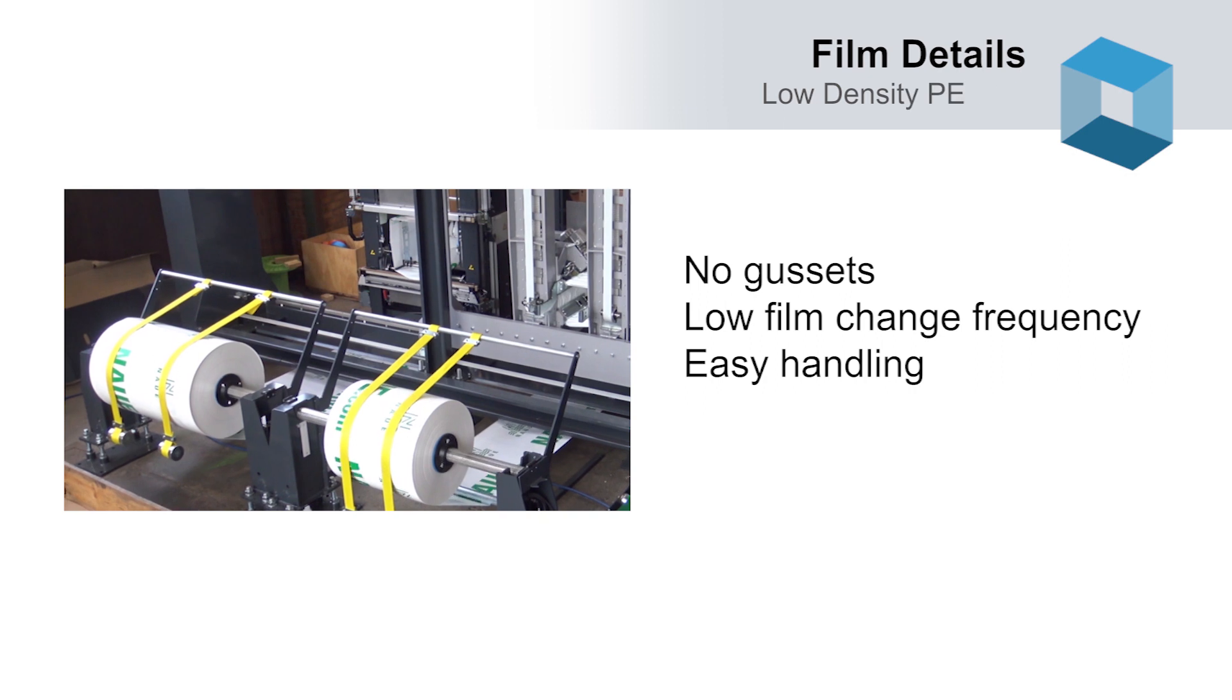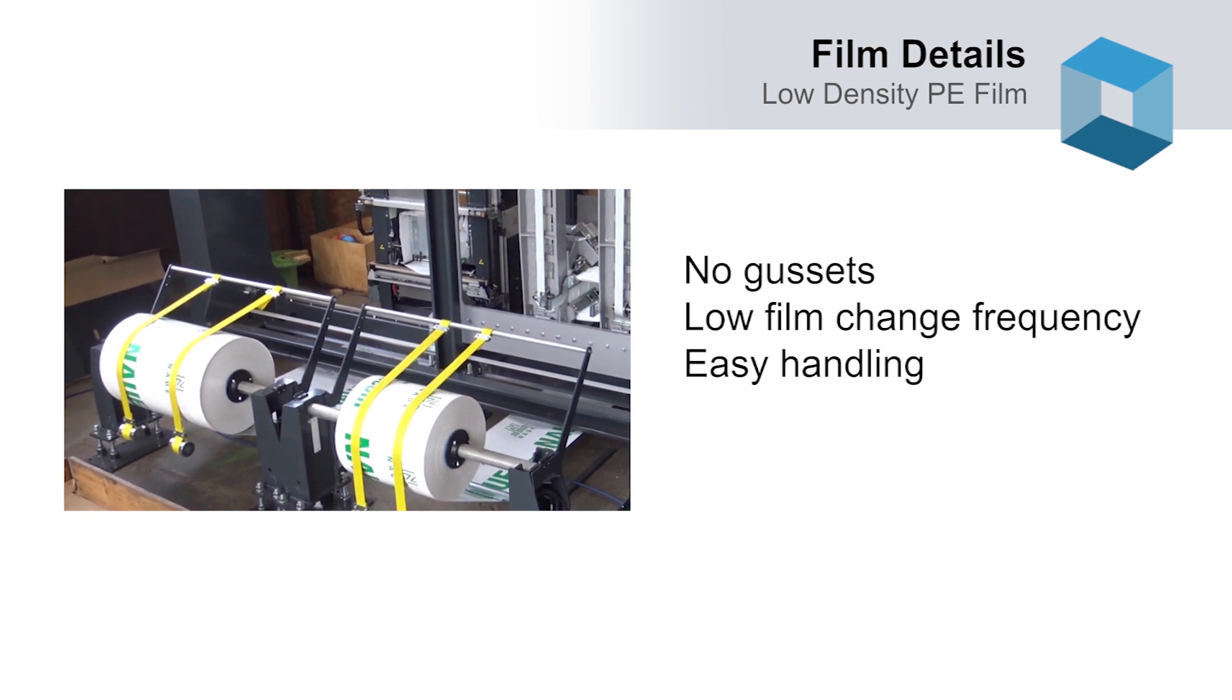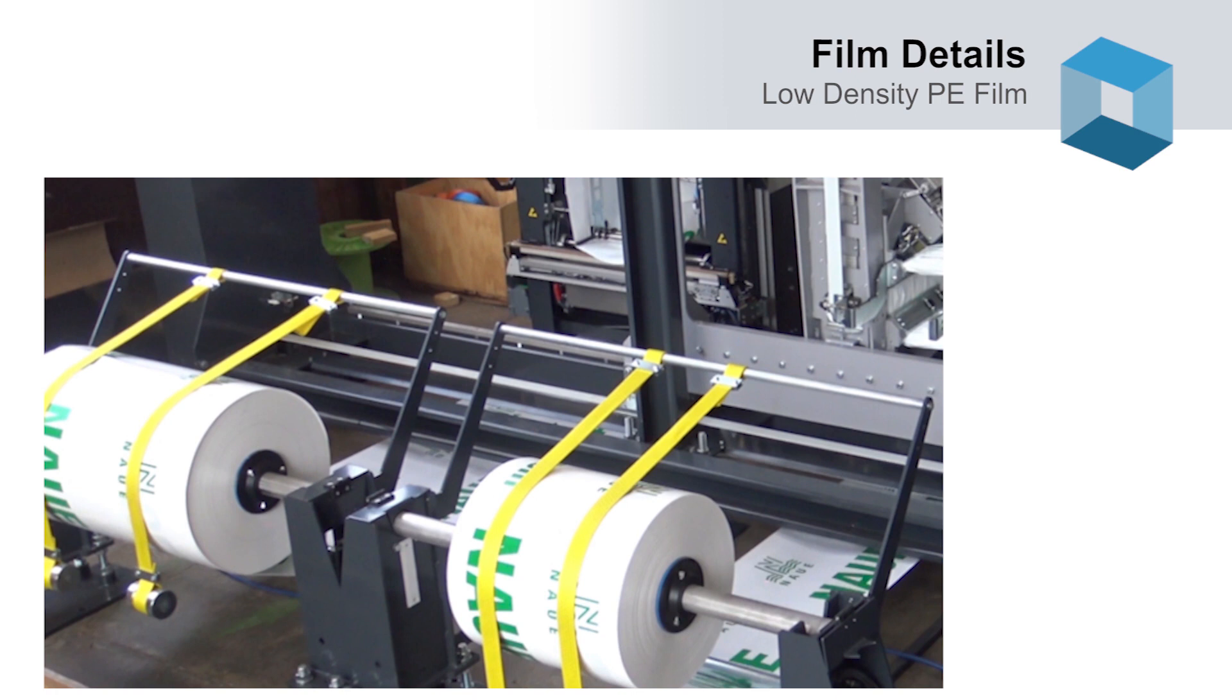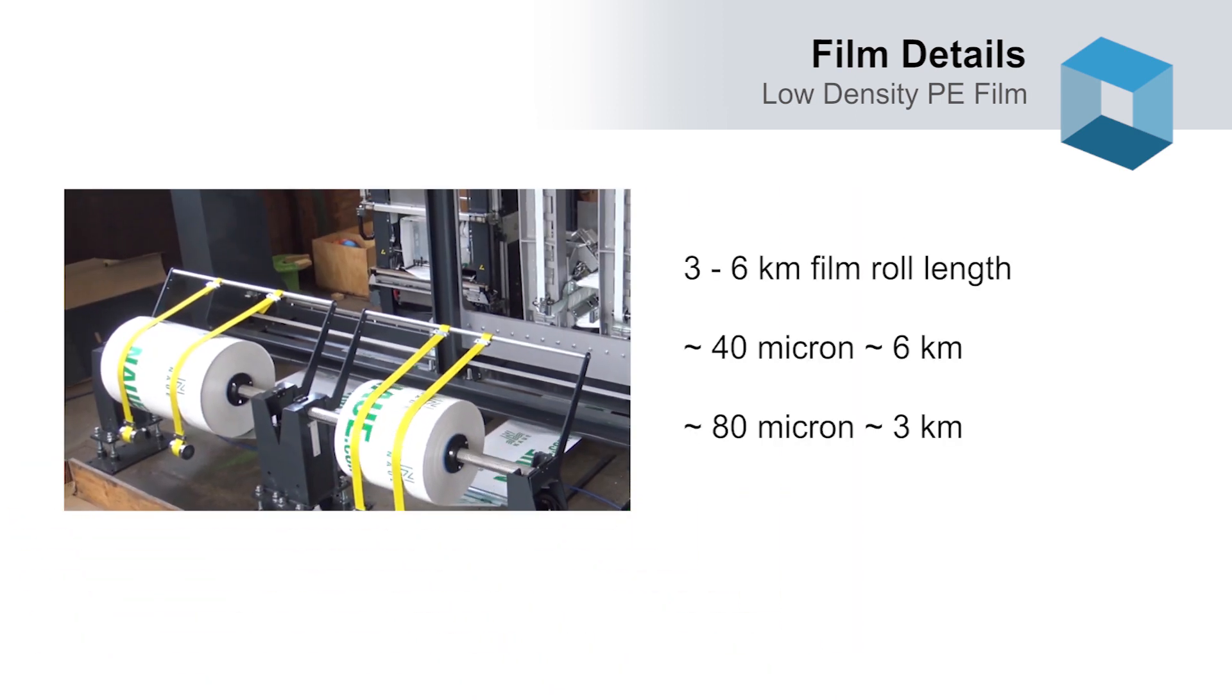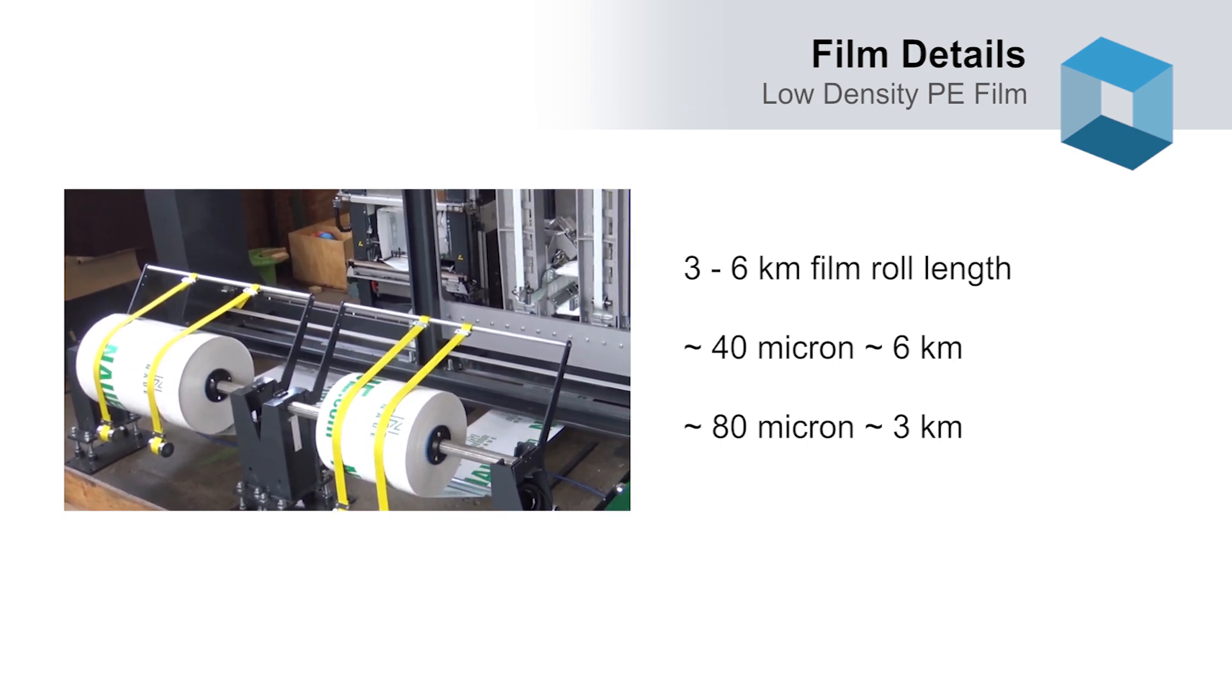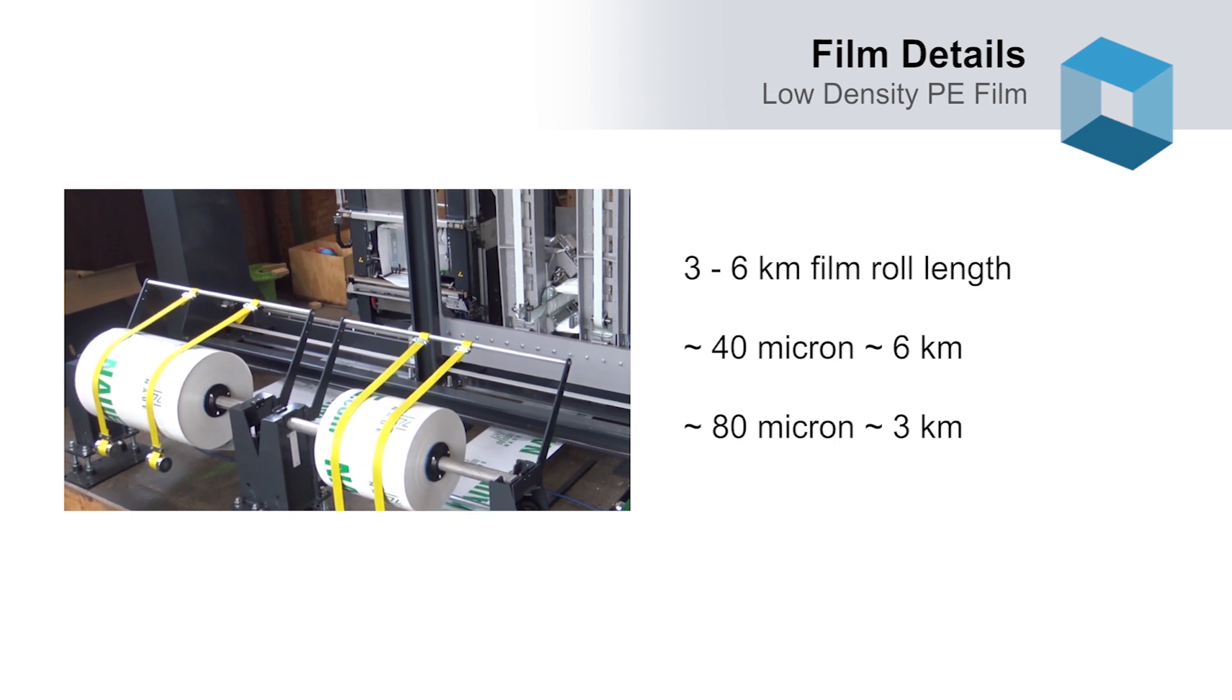Let's get back to the tubular film we saw in the beginning. Notice that we apply no gussets, meaning a low film change frequency. It's a two layer film. If you had gussets you would have four. This means that you can have a six kilometer long tubular film with 40 micron thickness and a three kilometer long film with 80 micron.